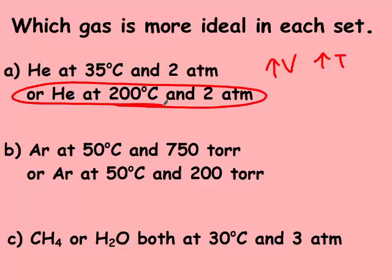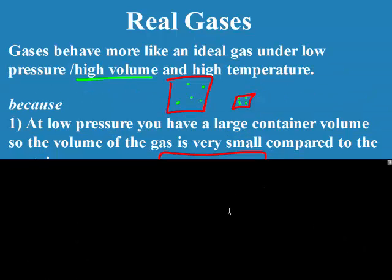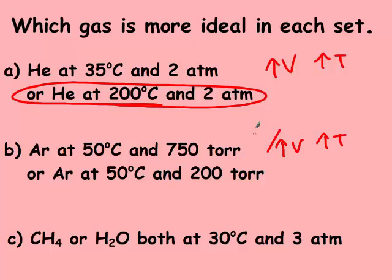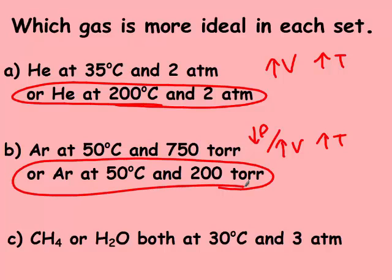For the next example, again they're not at the same temperature, pressure, or volume. Remember, higher volume means lower pressure. Our temperatures are the same, but this one has the lower pressure, so it's more ideal. For the last one, they're at the same temperature and pressure, so we want the lower IMF.